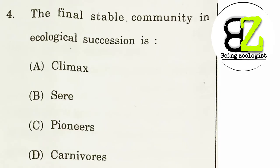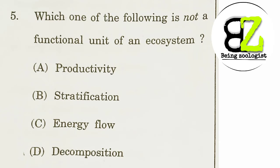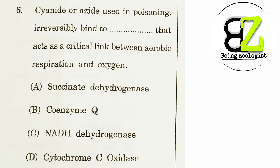The final stable community in ecological succession is called climax — so the answer is option A. Next question: which of the following is NOT a functional unit of an ecosystem? Stratification is not the functional unit of an ecosystem, so the correct answer is option B.